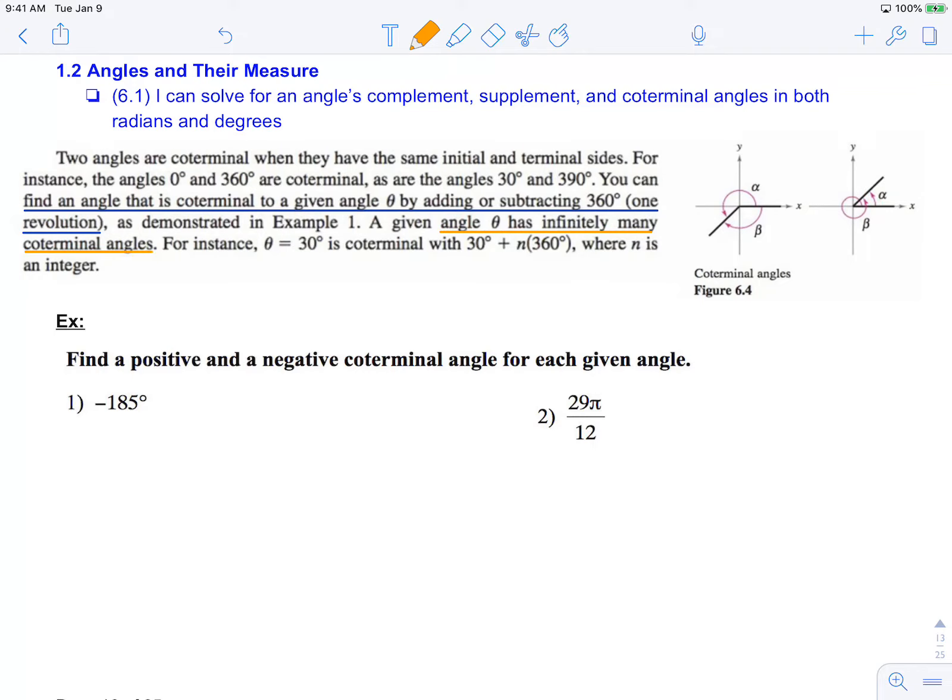Here in this example below, we want to find a positive and negative coterminal angle for each angle given. So if I start with negative 185 degrees, in order to get a positive coterminal angle, I'm going to rotate 360 degrees all the way around the circle in the positive direction. And that will land me at 175 degrees.